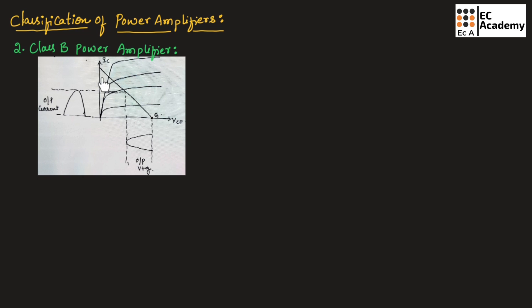Let us understand class B power amplifier. In class B power amplifier, the Q point is located at the cutoff region. Since the Q point is located exactly on the cutoff region, the output signal varies over one half of the input signal, which means the output flows for 180 degrees, which is half cycle of the input signal. This is the collector current of the class B power amplifier.